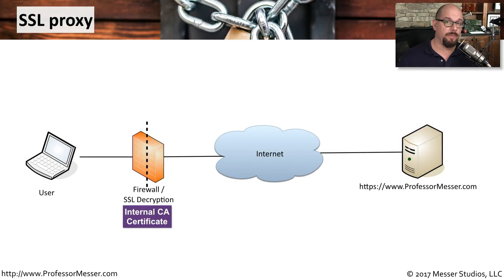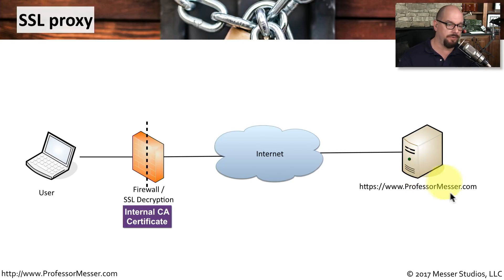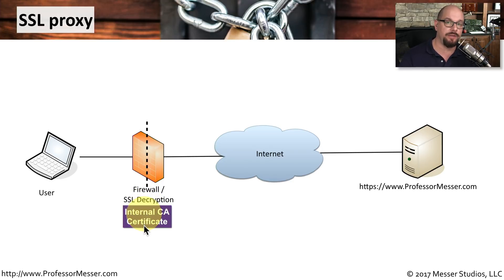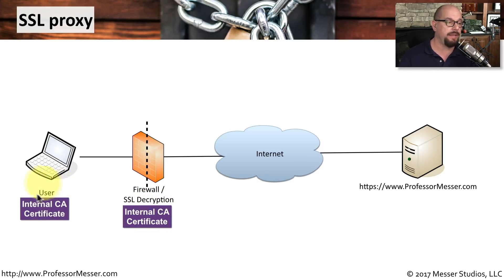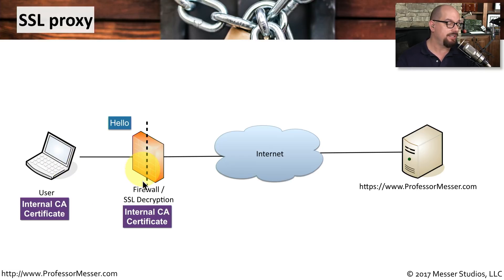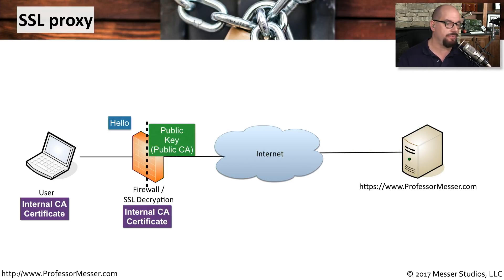To be able to decrypt the information going to this third party website, you're going to have to perform a proxy function. It's usually provided on a firewall or some other type of SSL decryption device. Your user is communicating to this third party website, ProfessorMesser.com. Inside the organization, this firewall has an internal certificate that has been created by the security people in your organization, and they've deployed that certificate to all of the devices inside your company, including your laptop. When you connect to the web server, you're sending the SSL handshake process — it is stopped by this proxy, and the proxy sends its own SSL handshake to retrieve the public key information from the web server.